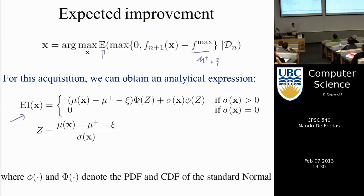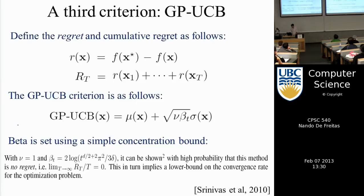This is the expected improvement criterion, very similar to probability of improvement except we're maximizing expected improvement rather than just the probability of improvement.